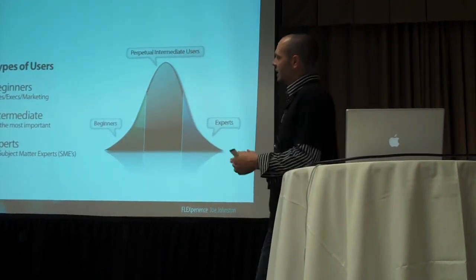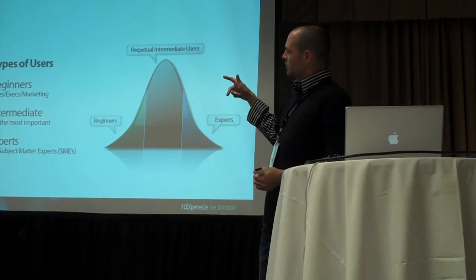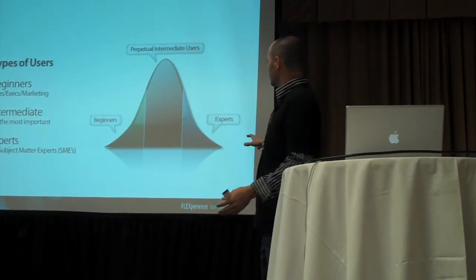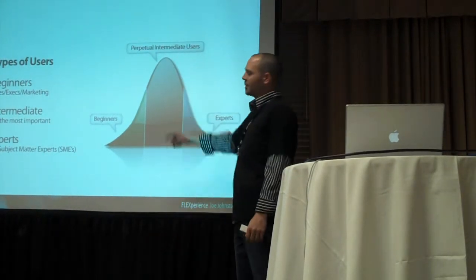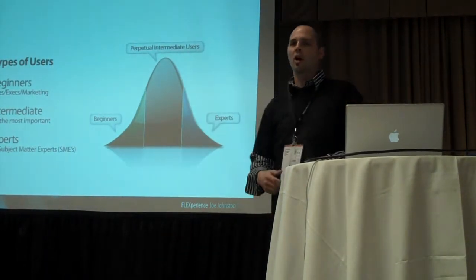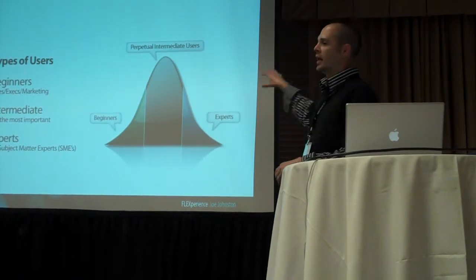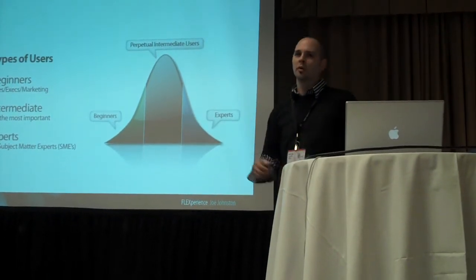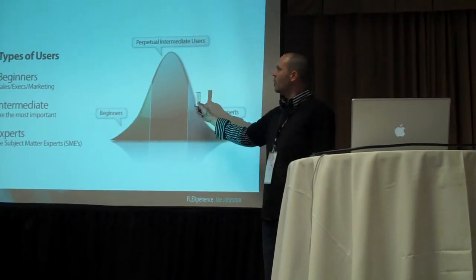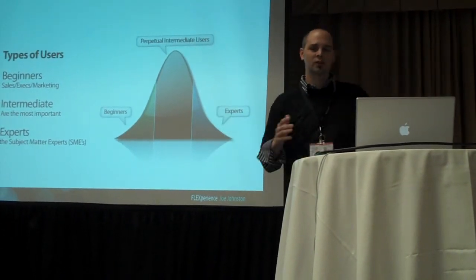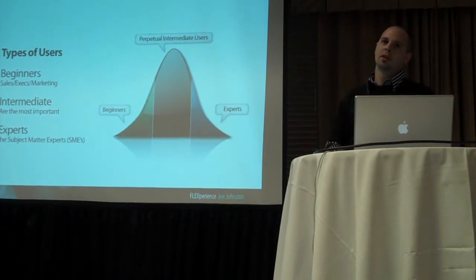So as you can see, the dilemma when you actually go and interview people or get information is that you're kind of stuck in these two areas. You have a hard time trying to figure out what that intermediate user really wants. Obviously you don't want to neglect beginners, you don't want to neglect experts, but you don't want to make that your entire focus. So the most important thing you can do is interview the actual user of the application — that's going to give you your professional intermediate user.